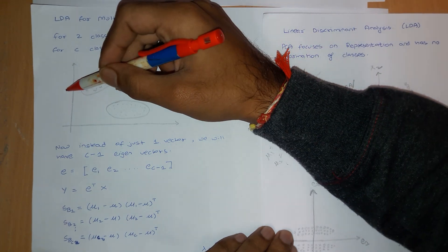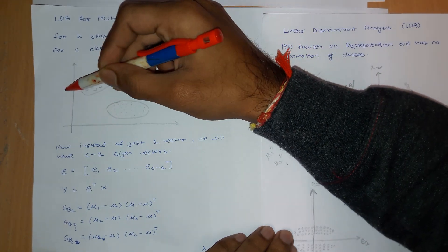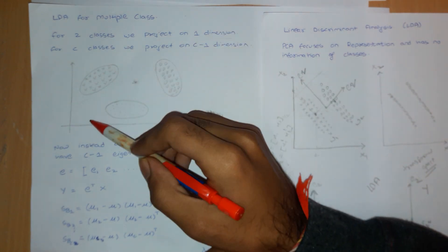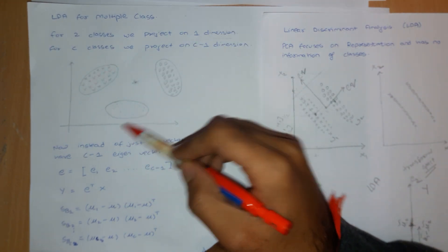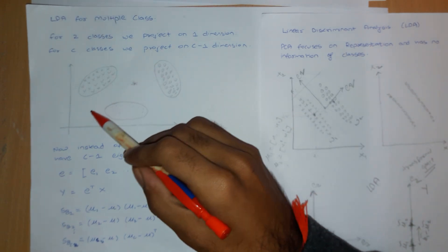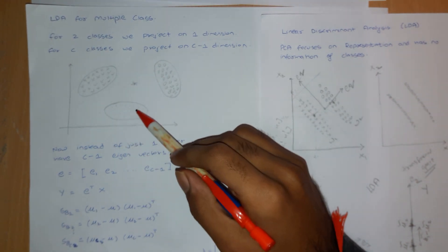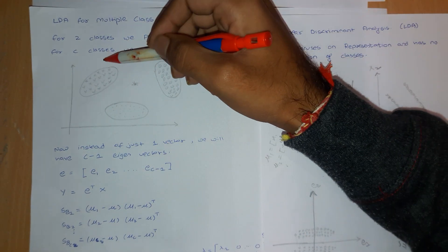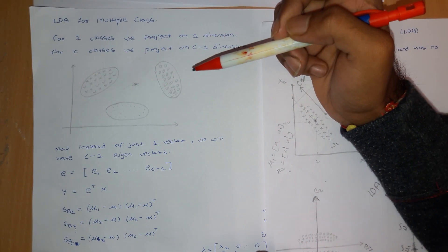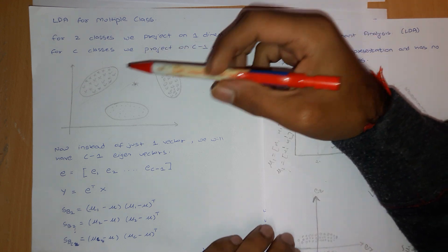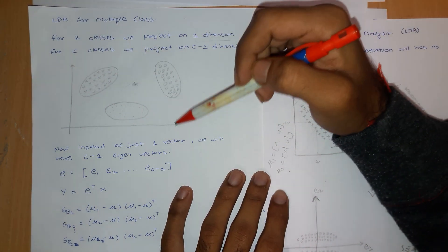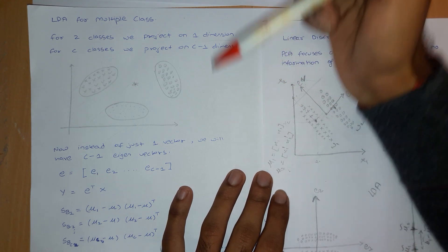For example, if I take one axis and project the data, these two classes might be maximally separated, but that projection will have a lot of overlap with the third class. Similarly for other axes, there will be overlap somewhere. So it is very unlikely that all three classes will get separated in just one dimension.